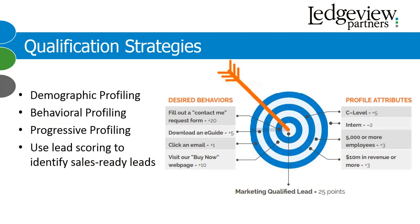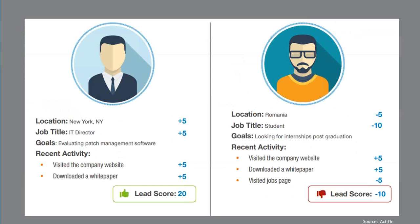Remember, the key is the strategy work you do upfront to develop scoring profiles that represent your ideal customer and identify the sales triggers — the attributes that should have higher value than others. This infographic provided by Act-On Software does a great job showcasing how scoring profiles can be used to determine a good lead from a bad lead. Just think: if you would have passed a student from Romania to your sales team after he downloaded a white paper from your website, that's not really a great use of your sales team's time.